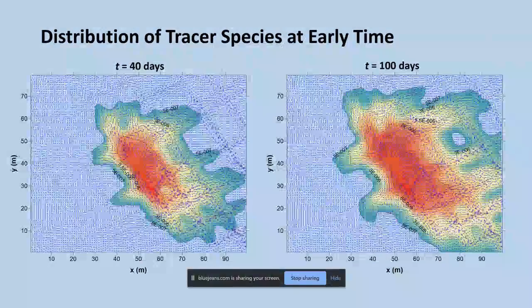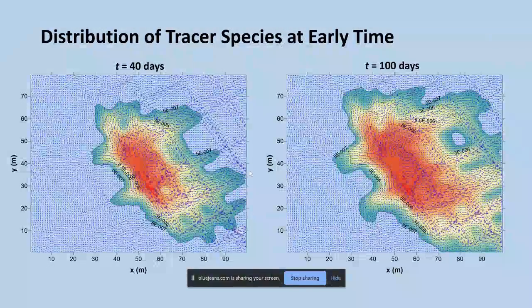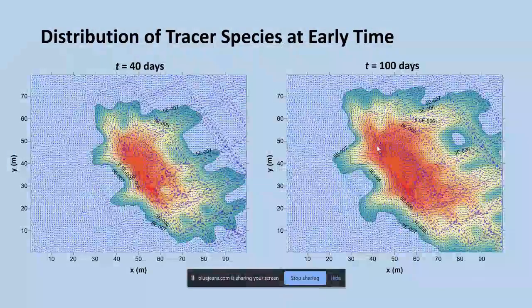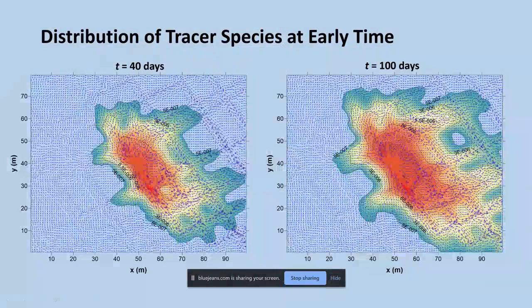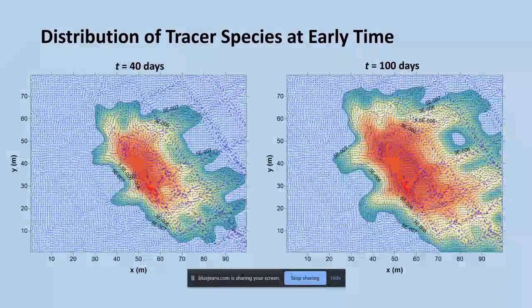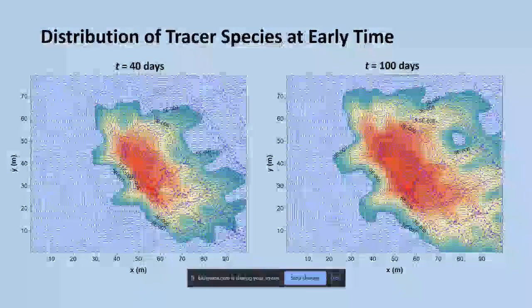Following various sets of fractures, it makes its way to the boundary. At 100 days that pattern intensifies and again you can see that the bromide distribution is not completely uniform but is following some of the fractures in this particular model.